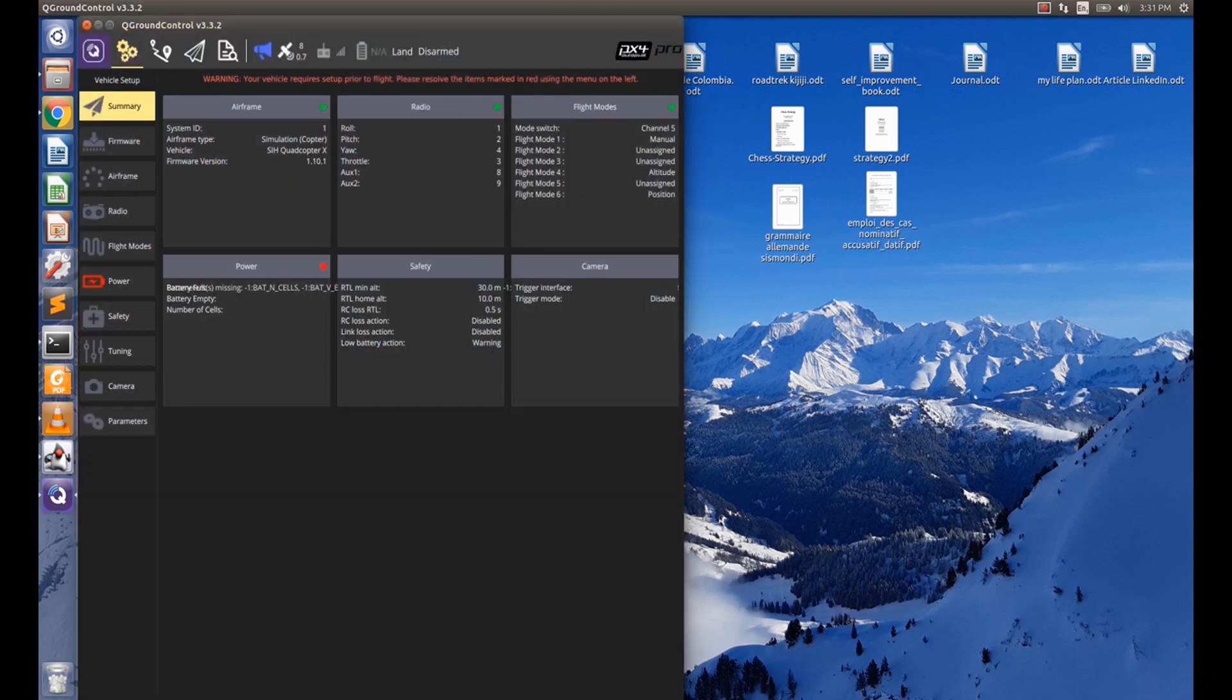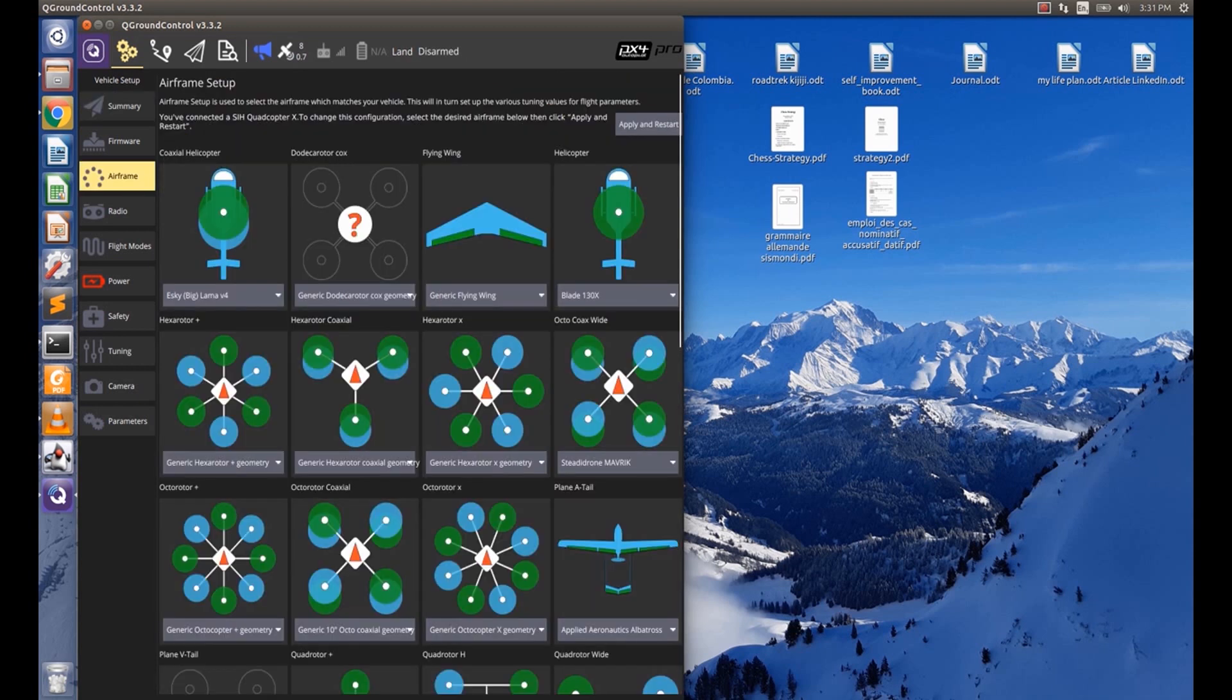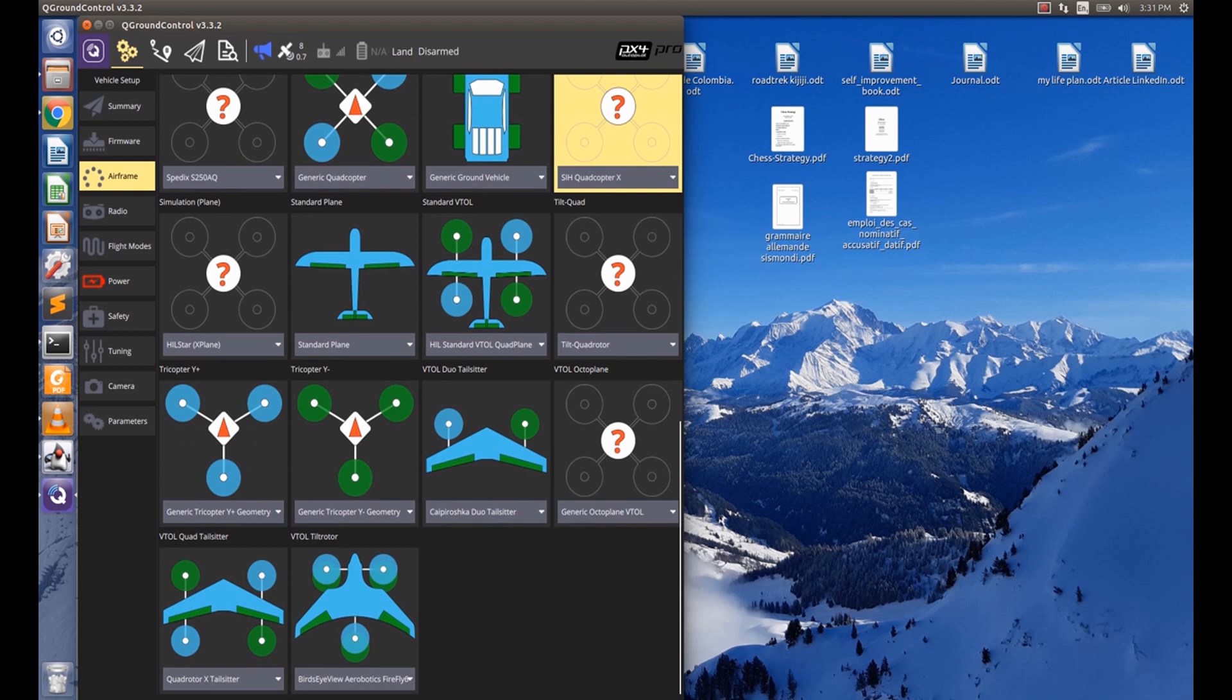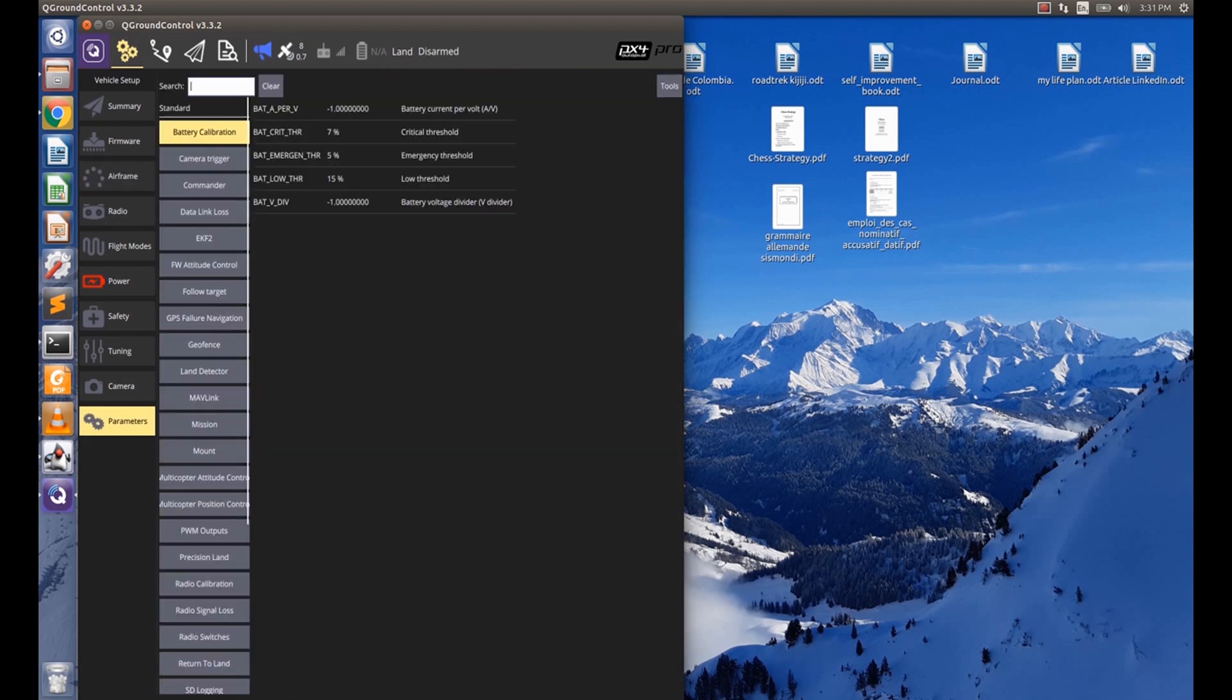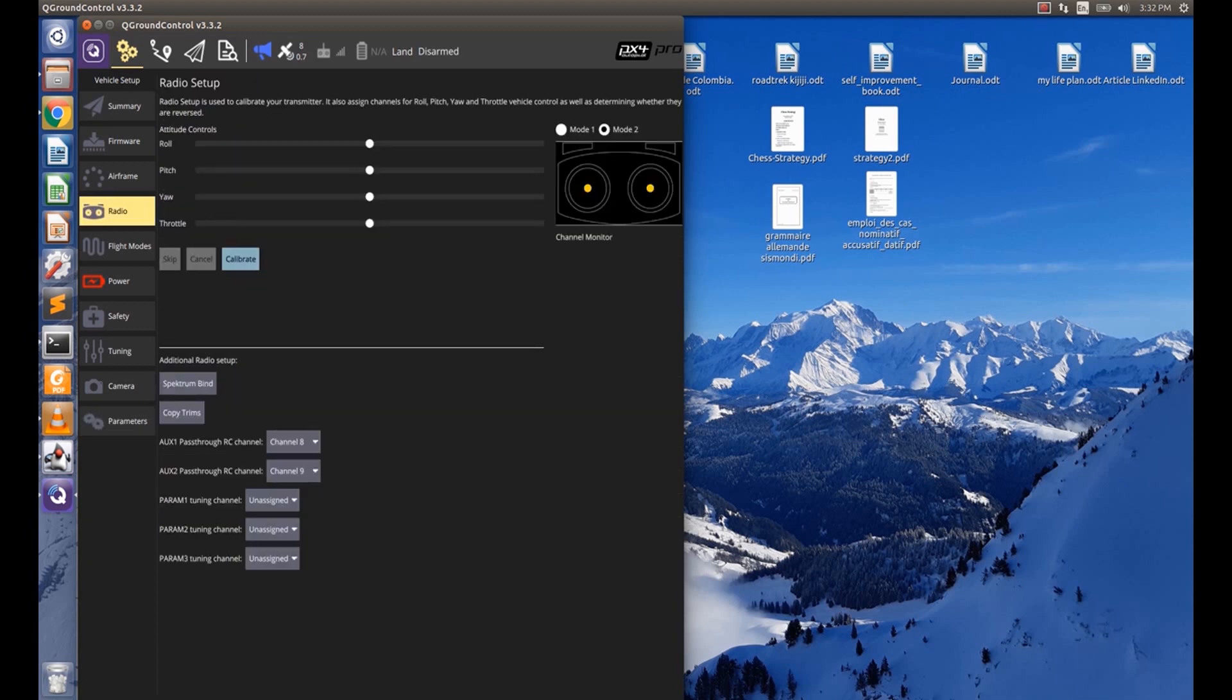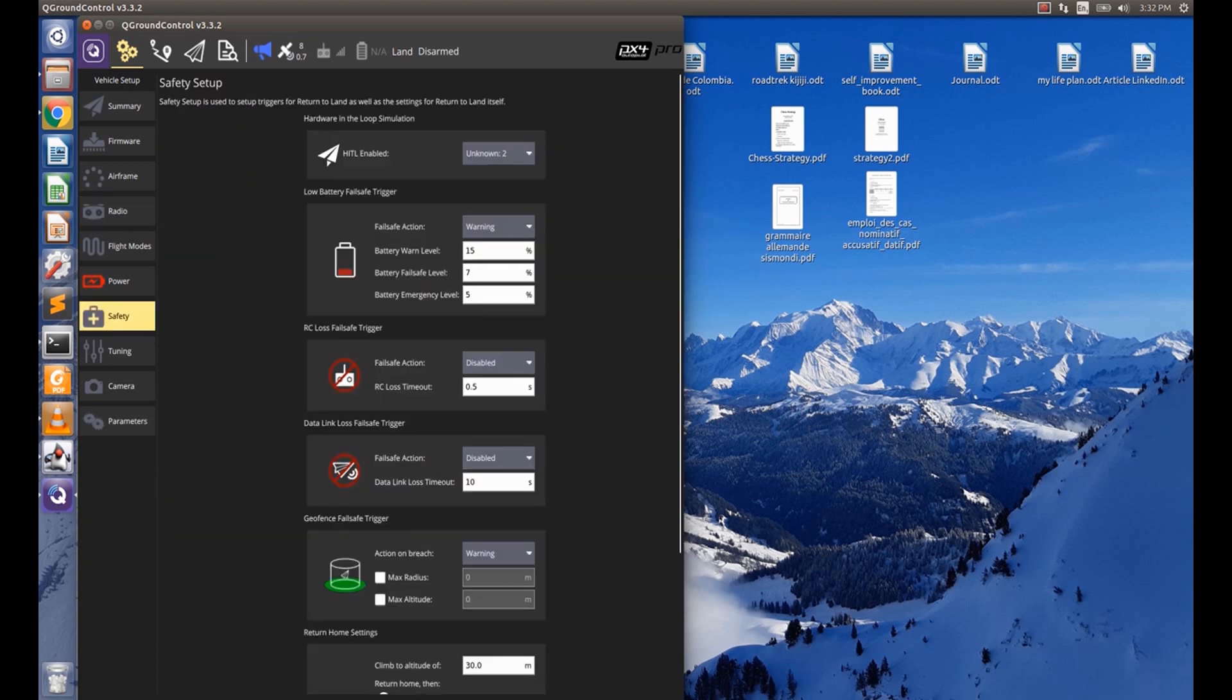The first thing to do is to open QGroundControl, plug the autopilot, and select the airframe SIH quadcopter X. The physical properties of the quadrotor can be modified by the parameter starting by SIH underscore, but let's skip the default values for this demo. You might then want to set up your radio, or if you don't have a radio, make sure to disable the RC loss failsafe.